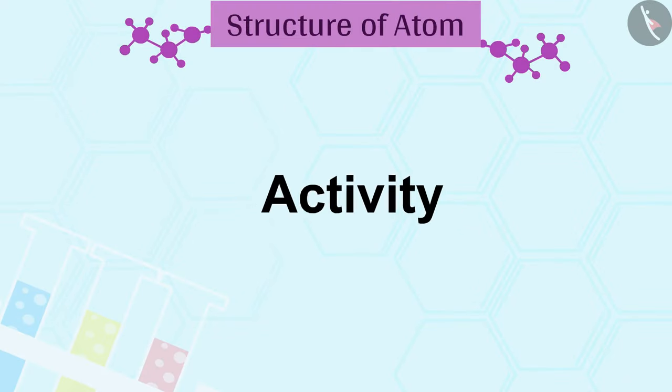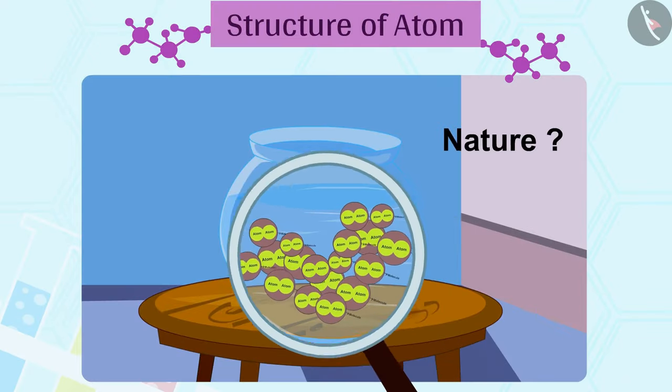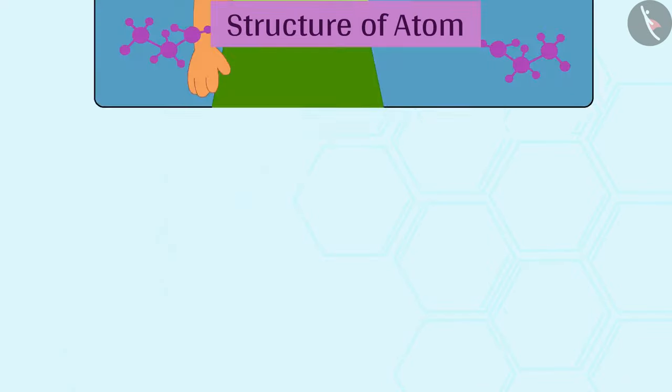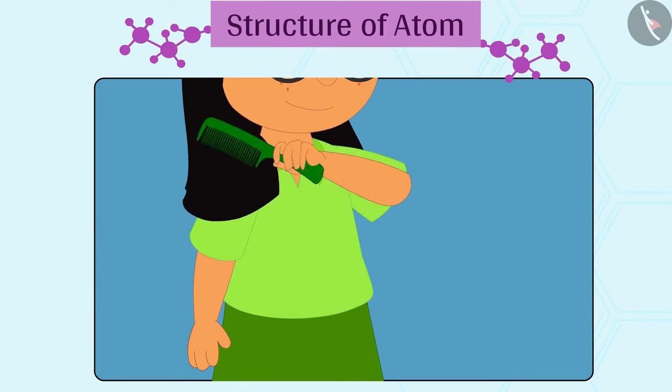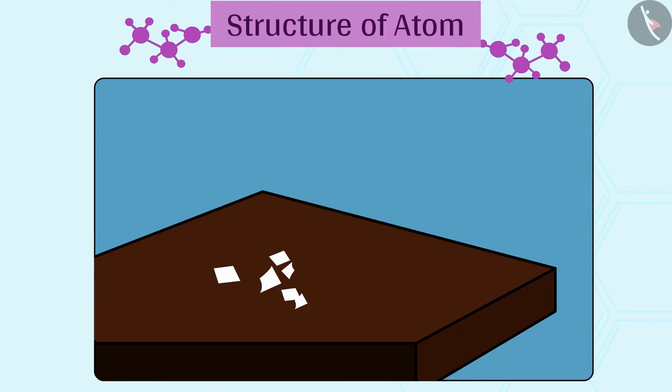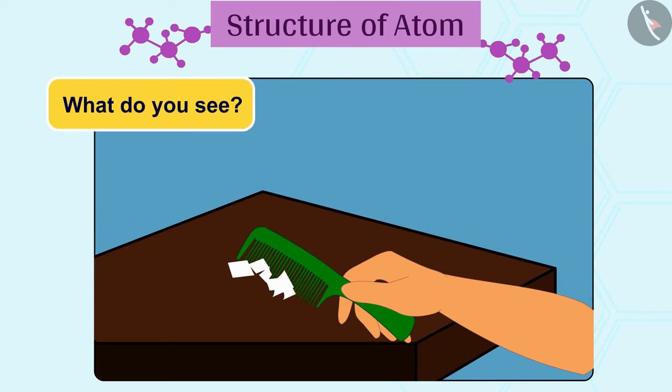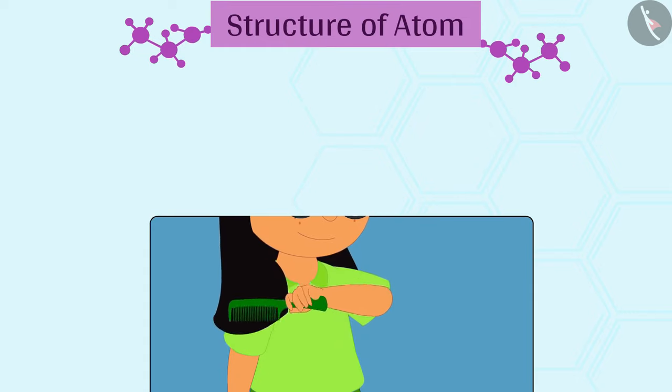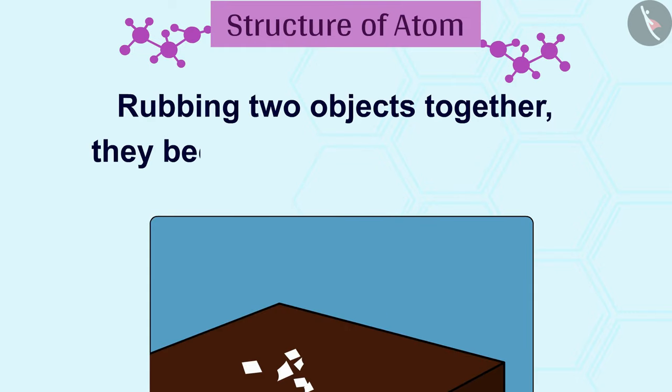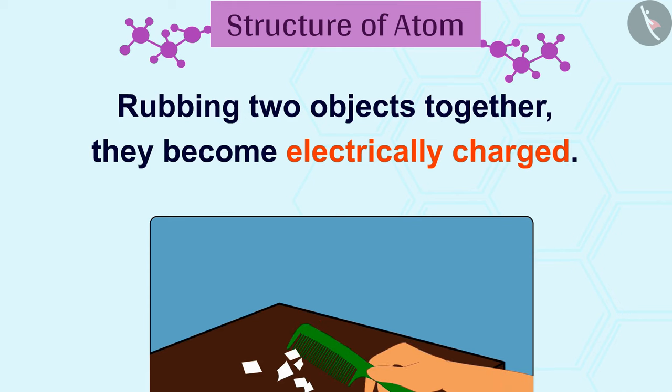Let us do an activity to know the nature of particles in matter. Comb dry hair, now move this comb close to the small pieces of paper. What do you see? Yes, the comb attracts small pieces of paper. We conclude that on rubbing two objects together they become electrically charged.